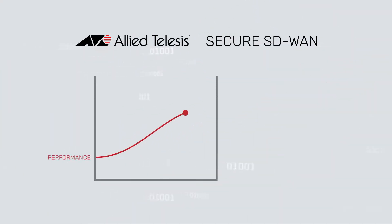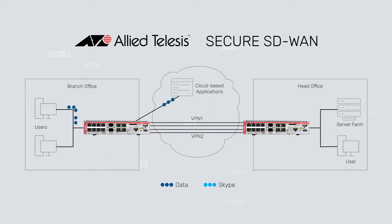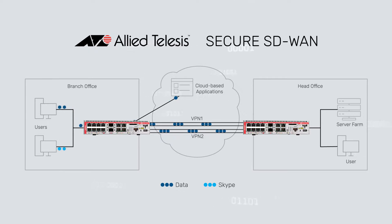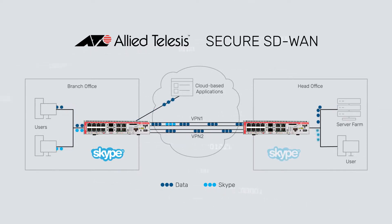Software-defined WAN allows enterprises to optimize performance and simplify management of their WAN connections. Secure SD-WAN load balances cloud-based applications and inter-branch traffic over multiple low-cost internet connections to reduce cost and increase performance.